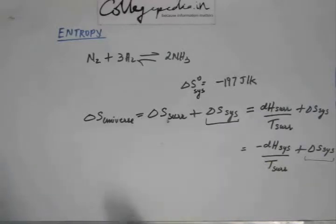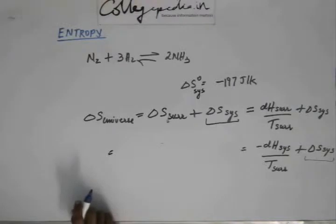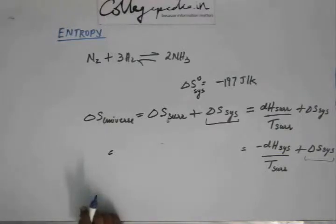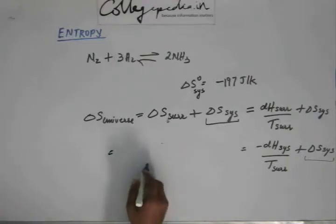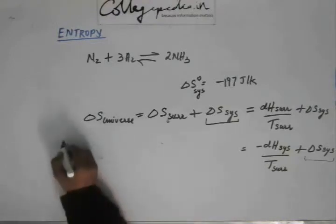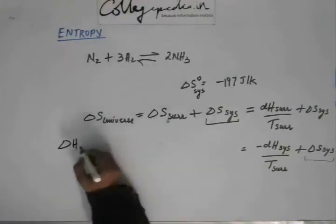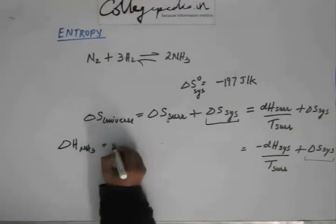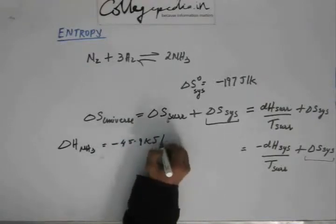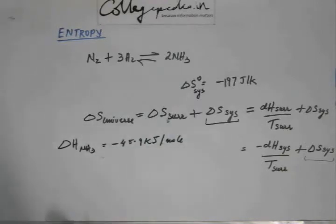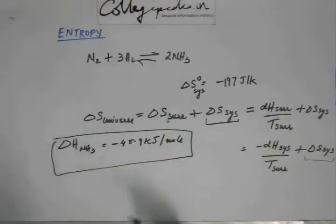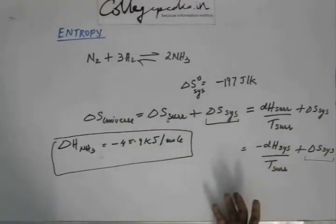Now I have to calculate delta S of surrounding, for which I require delta H of system. Delta H of ammonia is given as minus 45.9 kilojoule per mole. From this information you have to calculate delta H of the system — that means delta H of this particular reaction. The same approach used for delta S will be used for delta H.